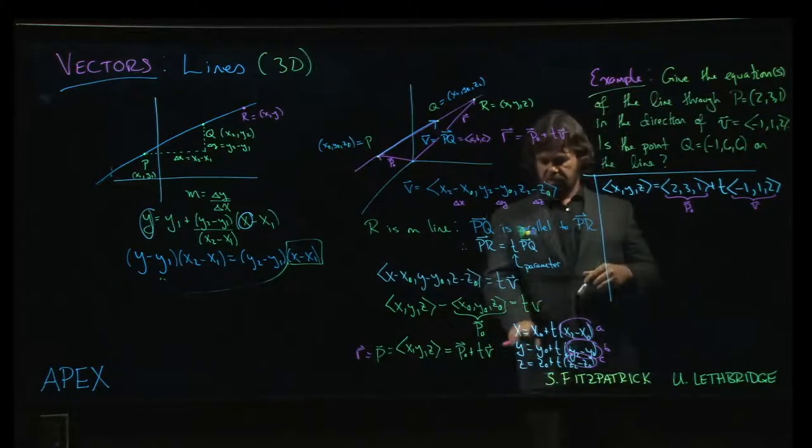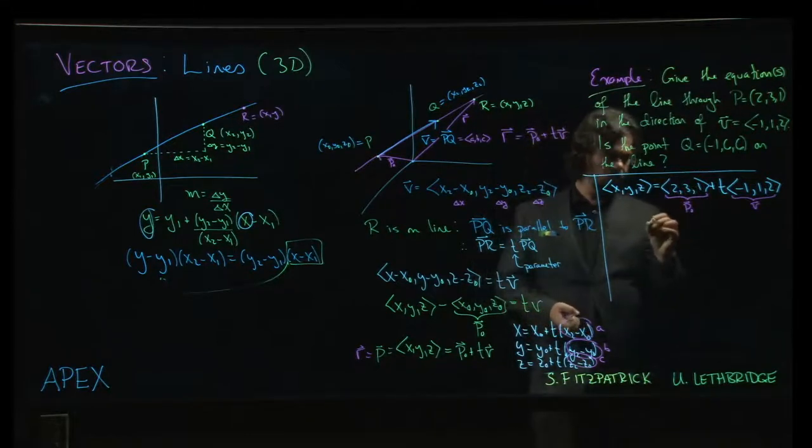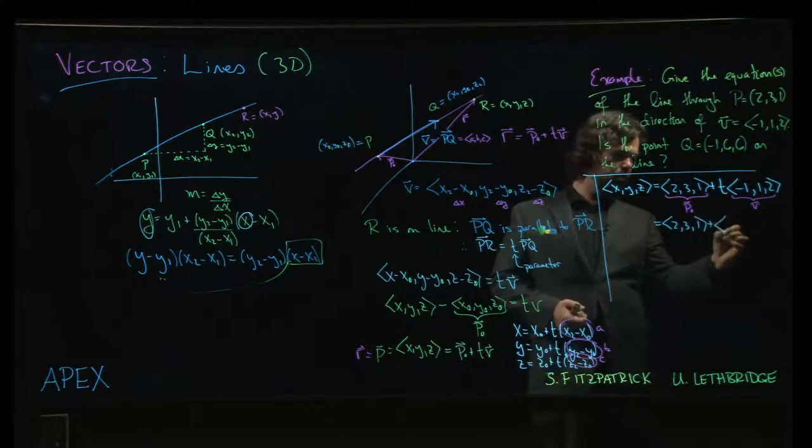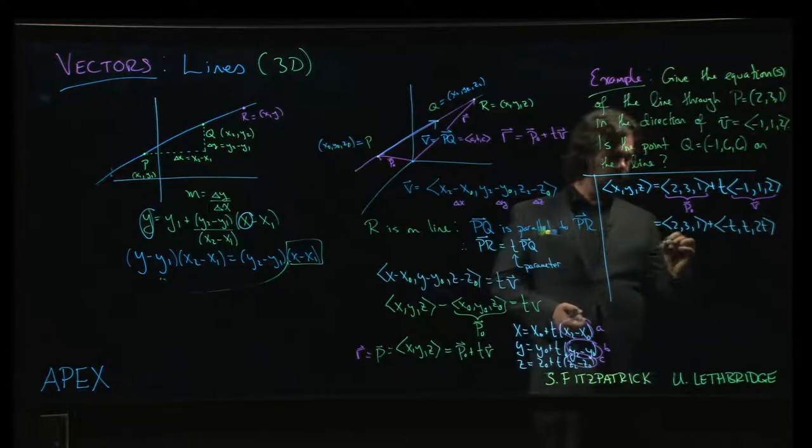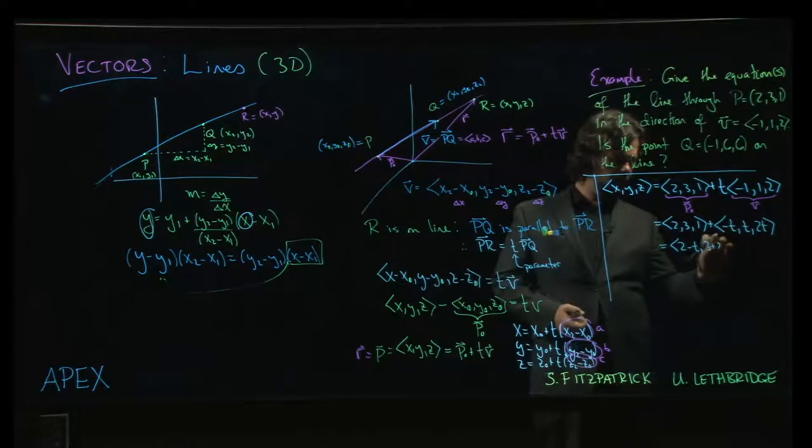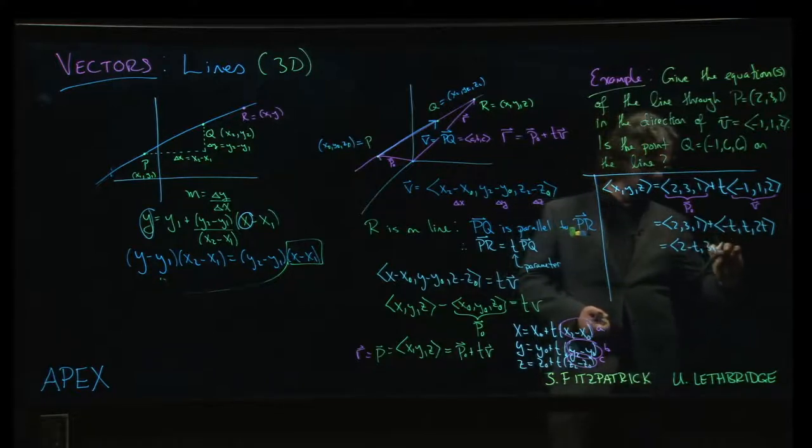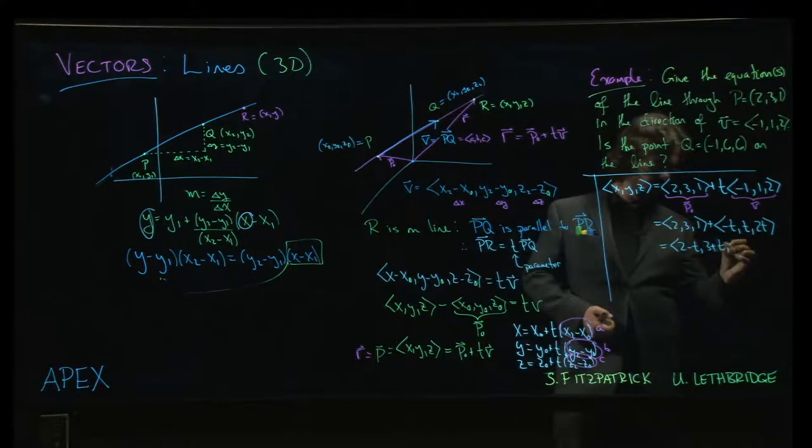Now, if we wanted to get the parametric form, what you can do is we do a bit of vector algebra. Let me do it in steps here just to show you how this works. We can multiply the t through: -t, t, 2t. And now we just add the corresponding entries. 2 - t, 3 + t—sorry, I was getting ahead of myself, starting to write the 2 for the next term—3 + t, 1 + 2t.